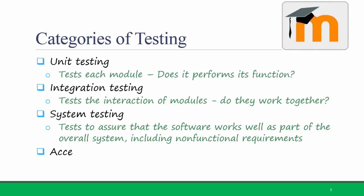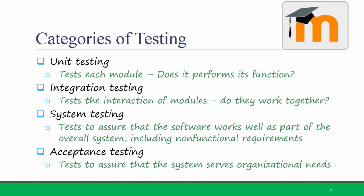The last level of testing is acceptance testing. Acceptance testing means that you test to assure that the system serves the organizational needs and it involves the actual users of the system. If you were programming Titanium, you would want a student or professor to try it out and see if it works for their specific needs.